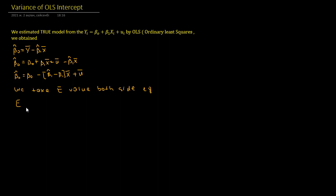If we plug y bar into our beta 0 hat equation, it will be: beta 0 hat is equal to beta 0 plus beta 1 x bar minus u bar minus beta 1 hat x bar. If we take x outside the bracket, it will be beta 0 hat is equal to beta 0 minus beta 1 hat minus beta 1 times x bar, plus u bar.